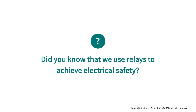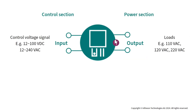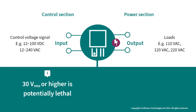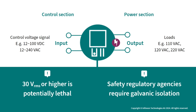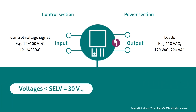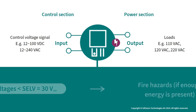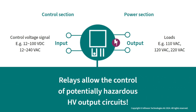We use relays to achieve electrical safety. High load voltages transferred onto logic can damage control circuitry. Additionally, 30 Vrms or higher is potentially lethal, and safety regulatory agencies such as UL, CSA, VDE, and BABT require galvanic isolation. A safe extra low voltage of 30 Vrms can also cause fire hazards if enough energy is present. With their safe low voltage input circuit and galvanic isolation, relays allow the control of potentially hazardous high voltage output circuits.